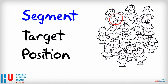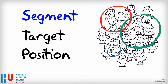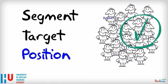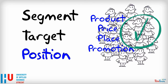Segment means you'll break up the market into different homogenous groups. Target means you'll select specific segments to serve, and Position means you'll develop your marketing mix to appropriately serve the needs of the segment.